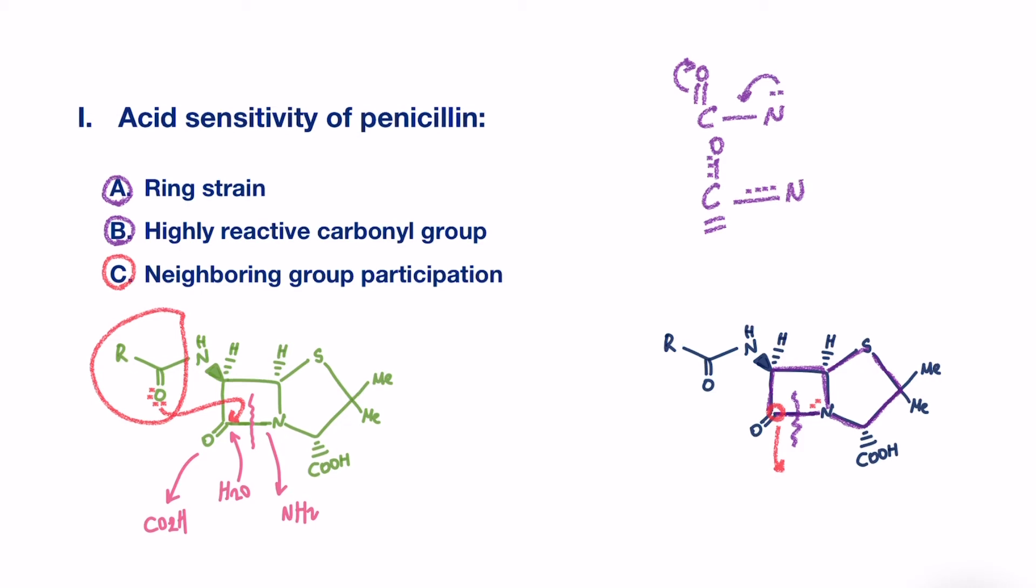Then, what is the solution to this problem? The beta-lactam ring is vital for the activity of penicillin, and therefore, nothing can be done to the first two factors. Luckily, we can play around with factor number 3. The aim is to reduce the amount of neighboring group participation that takes place by introducing an electron-withdrawing group on the R, that could draw electrons from the carbonyl oxygen and reduce its tendency to act as a nucleophile.